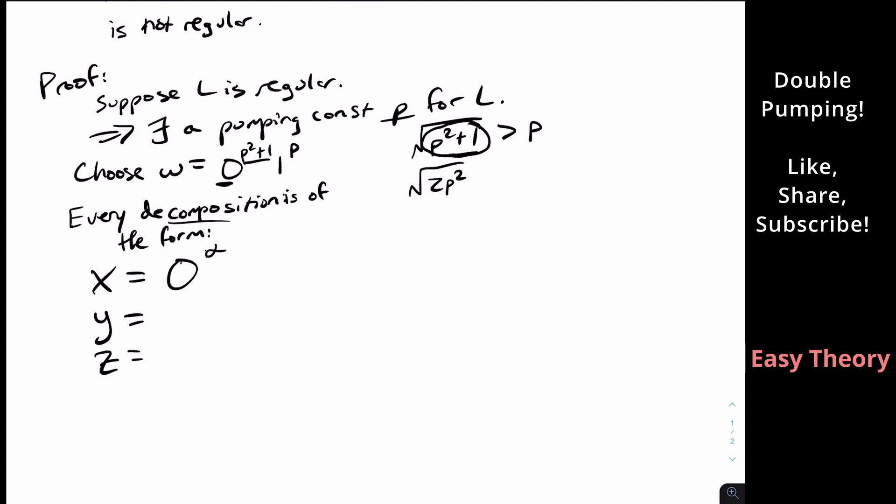because P is less than or equal to P squared plus one. So it's some number of zeros, but I don't know how many because we're looking at every decomposition. We should note here that beta is at least one because the length of Y is at least one.